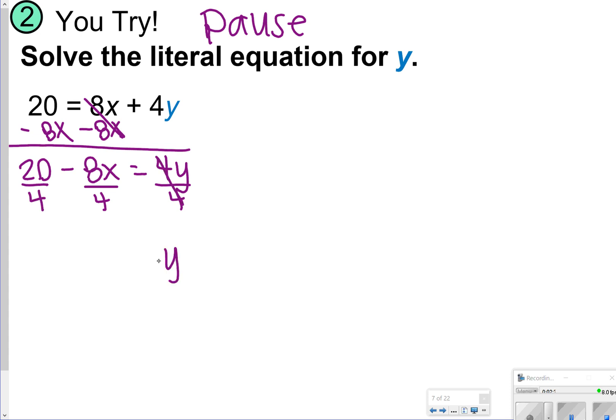So I'll have y by itself now. I can do 8 divided by 4, that'll give me 2x. And then 20 divided by 4 is 5. So 5 minus 2x is equal to y.